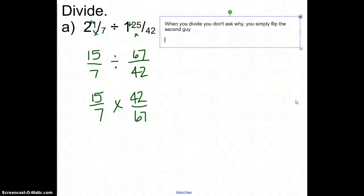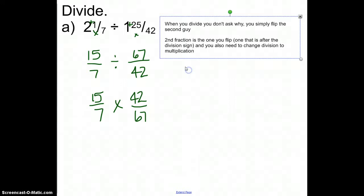Instead of having division, it would become multiplication and the first fraction stays the same. Just for a minute, I want to talk about this, my little rhyme here. When you divide, you don't ask why, you simply flip the second guy. That refers to the second fraction is the one you flip. It's the one that is after the division sign. You also need to change division to multiplication.